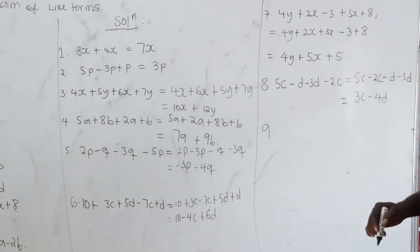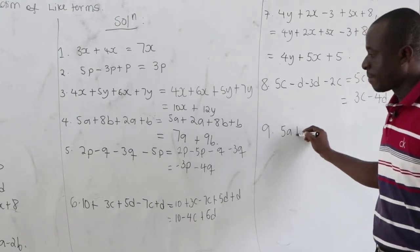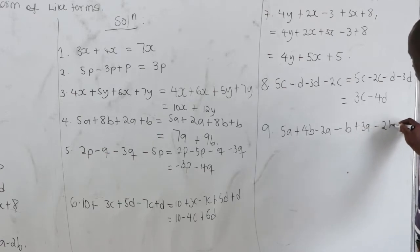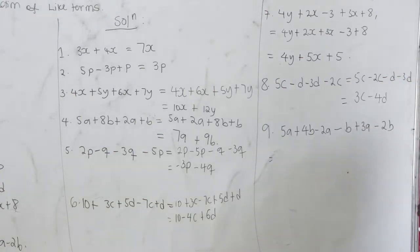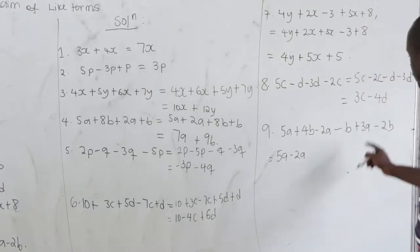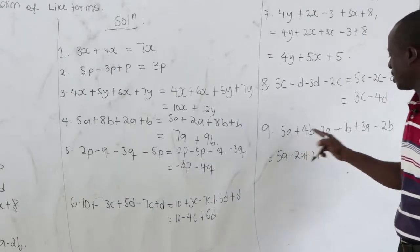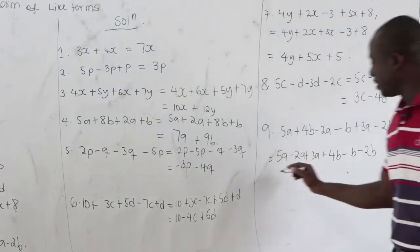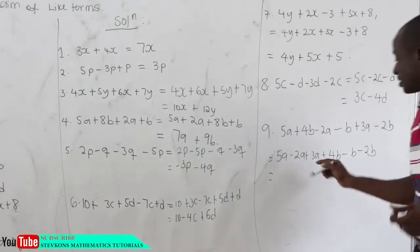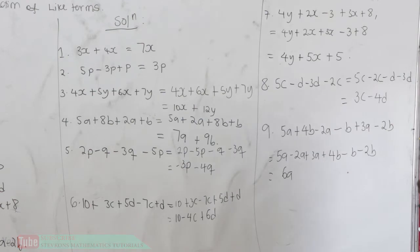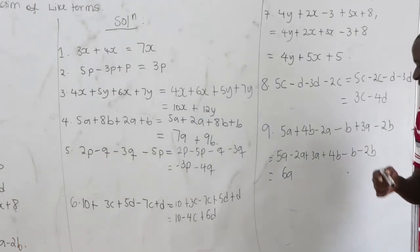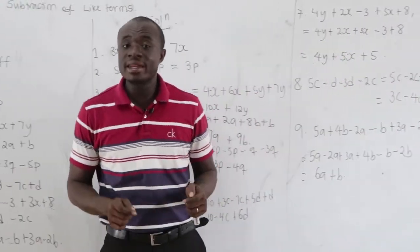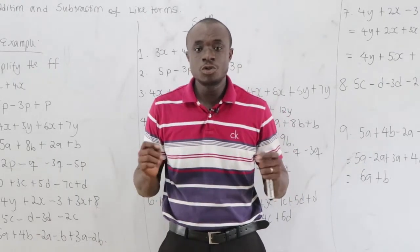Question 9: 5a plus 4b minus 2a minus b plus 3a minus 2b. Group like terms: 5a minus 2a plus 3a. That gives 3a plus 3a equals 6a. Then 4b minus b equals 3b, and 3b minus 2b equals b. This is very easy and it's a foundational topic — if you are strong with this, you'll enjoy maths.